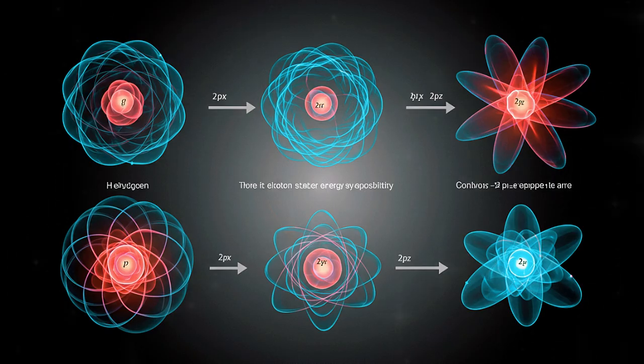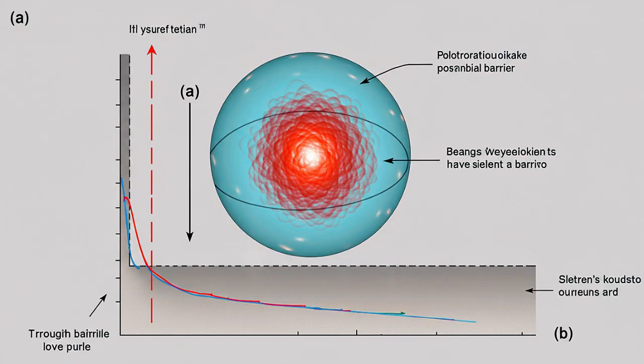The electron's wave function, which ordinarily diminishes smoothly at the boundaries, now extends somewhat farther in that direction, reaching into the region beyond the barrier. Through this mechanism, a portion of the electron's probability cloud leaks outward, despite the electron lacking sufficient energy to escape classically.